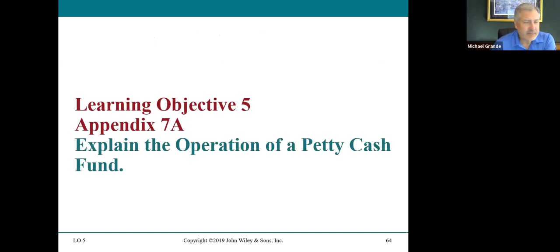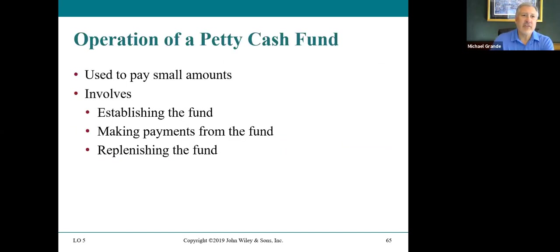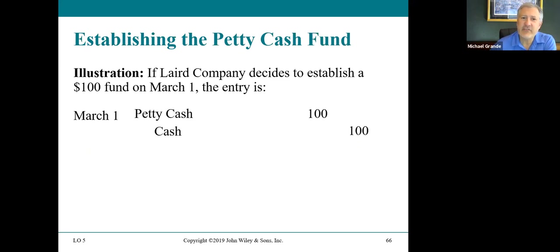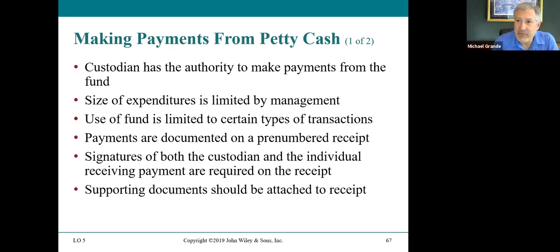Petty cash: somebody in the office has a drawer full of cash used to pay small expenses. Operation of a petty cash fund involves establishing the fund, making payments from the fund, and replenishing the fund on a regular basis. If a large company decides to establish a $100 fund in March, the entry is: debit petty cash, credit the regular cash account. The custodian has authority to make payments; the size of expenditures is limited by management — typically $10, $20, or $30 items. Use is limited to certain transaction types, and payments are documented on pre-numbered receipts.